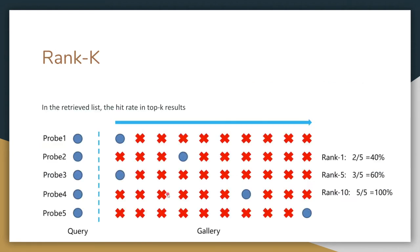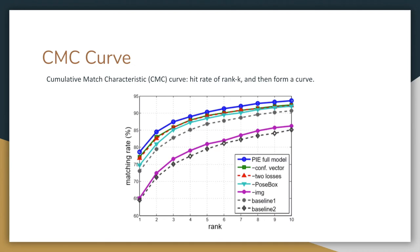There are several metrics for measuring person re-ID models. First is Rank-K: it is the hit rate in the top-K results of the retrieved list. For example, for Rank-1, 2 queries have been hit out of 5, so it's 40%. For top-5, there are 3 hits, so it's 60%. For top-10, there are 5 hits for 5 queries, so it's 100%. We also measure with a CMC curve, which is the hit rate at Rank-K plotted as a curve.